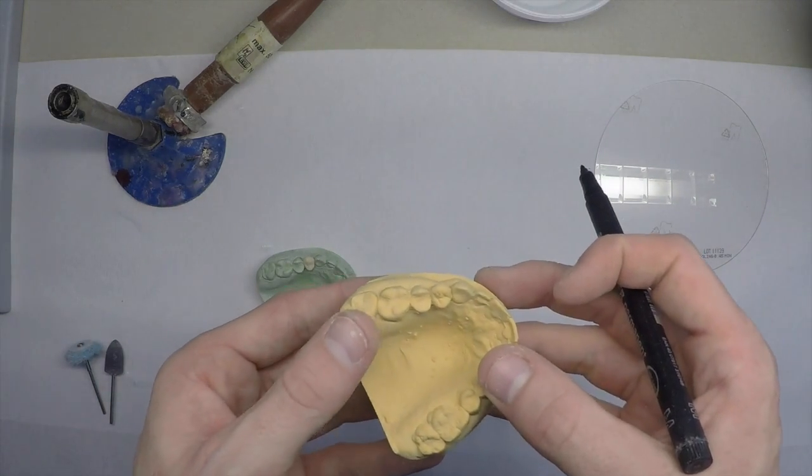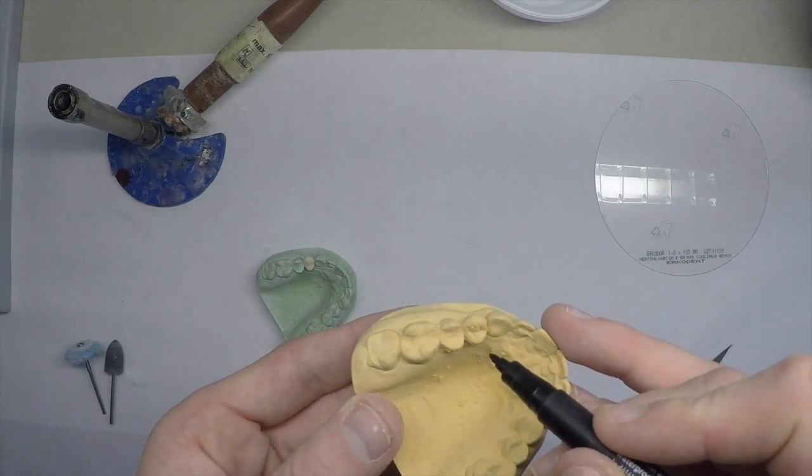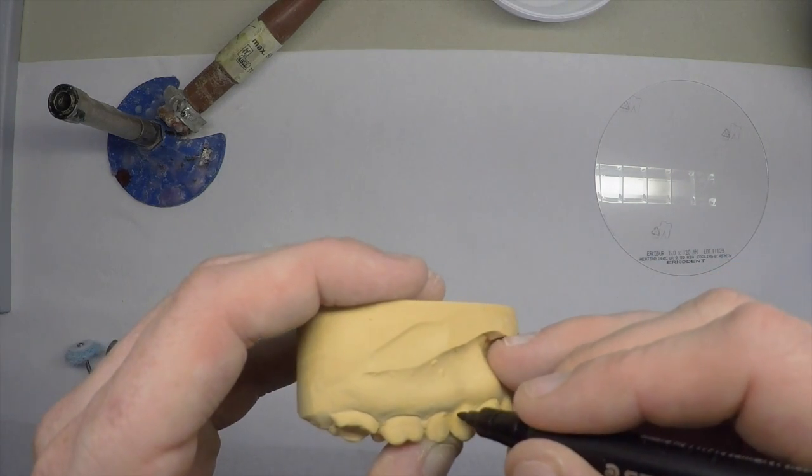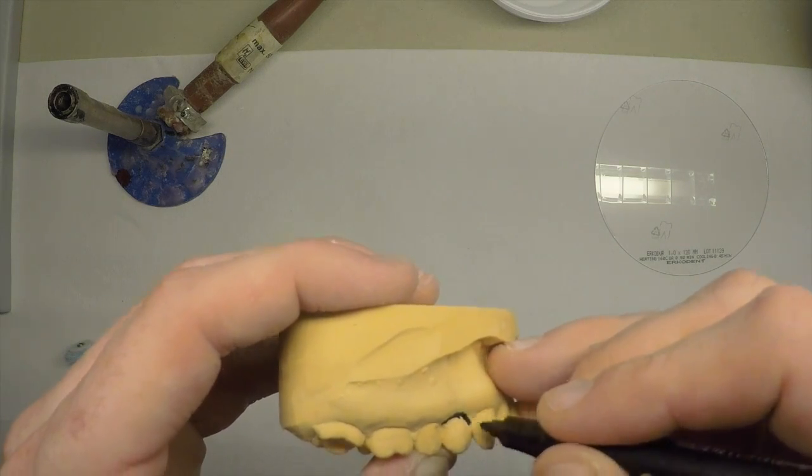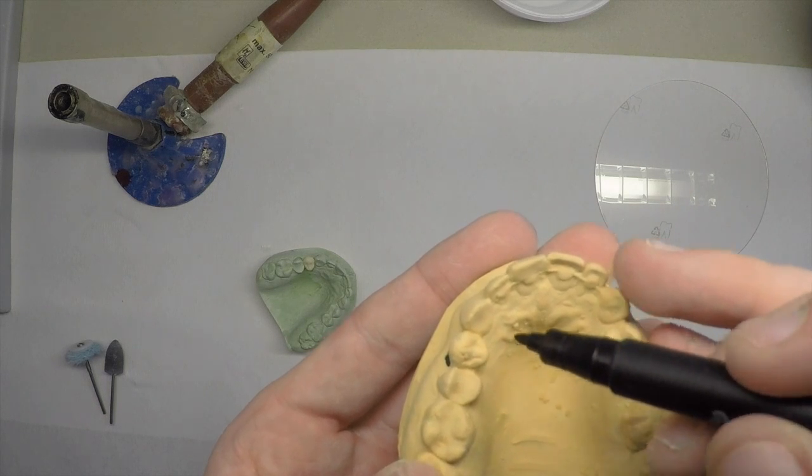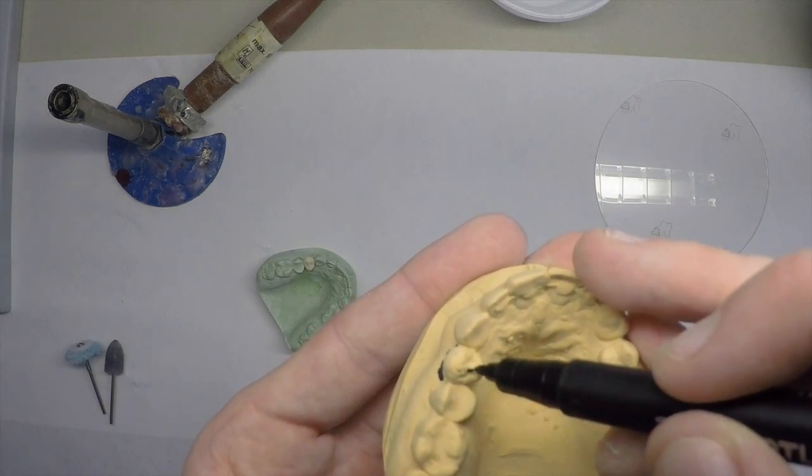We want to mark a few areas on the model. In this case we're placing an implant in tooth 1-4, so we want to mark the gingival margin first. Then we also want to mark where we would expect or want the screw access hole, which is going to be just slightly lingual to the centre of the tooth.